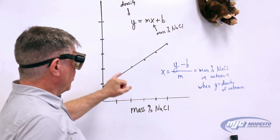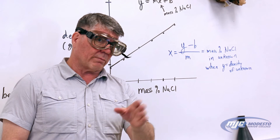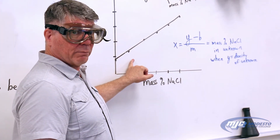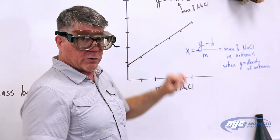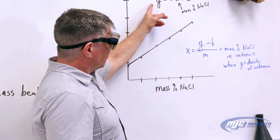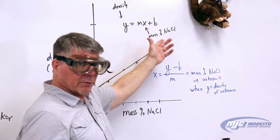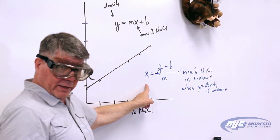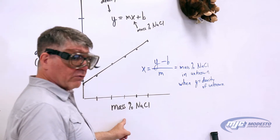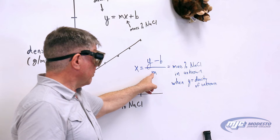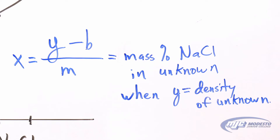What you guys are going to do is take that data and use a spreadsheet — it doesn't matter which one — to make this graph. All spreadsheets can graph that data. You're also going to draw the best fit straight line and get the equation of that line. What you get is an equation where m is the slope — some number your spreadsheet gives you — and b is the y-intercept. To use this, you rearrange it to solve for x, because your goal is to find the mass percent sodium chloride in your unknown, which is x. You'll have the y-intercept b and the slope m from your spreadsheet, and you'll know the density of your unknown because you're going to measure it. Plug that in and solve for x — that's your goal: the mass percent sodium chloride in your unknown solution.